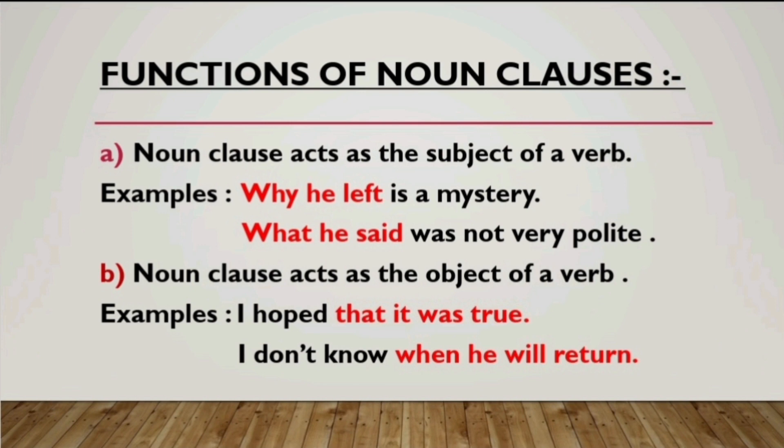Let us talk about the functions of noun clauses. The first function is that a noun clause acts as the subject of the verb. For example, 'Why he left is a mystery' — here the noun clause 'why he left' is acting as the subject of the verb 'is.' Another example: 'What he said was not very polite' — here 'what he said' is a noun clause acting as the subject of the verb 'was.'